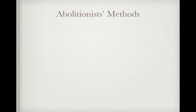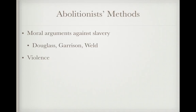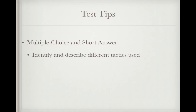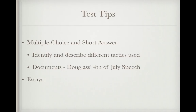There are three abolitionist methods the AP curriculum identifies. First, moral arguments against slavery — people like Douglass, Garrison, and Weld. Second, the use of violence — such as Nat Turner and John Brown. Third, assisting slaves in escaping — including the Underground Railroad and Harriet Tubman. For the exam: multiple choice and short answer may ask you to identify and describe different tactics. Frederick Douglass's Fourth of July speech is a key document, and this topic could appear in essays on sectional tensions prior to the Civil War.